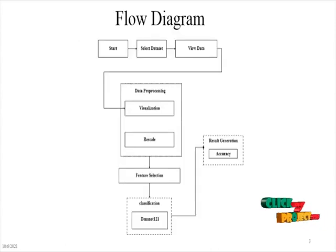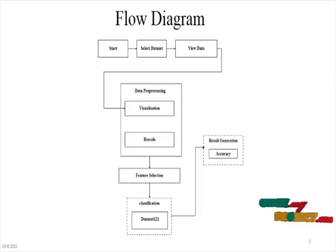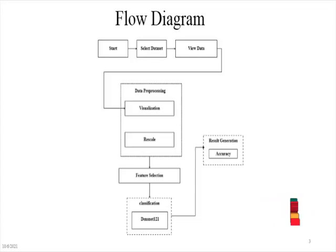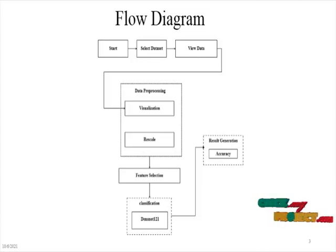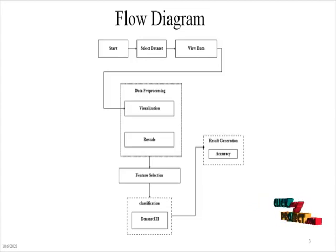In the flow diagram of the project: first, we start the program and select the plant dataset as input data. We use the dataset as a data frame — like tail or head. Then it applies into data pre-processing, where we retrieve sample images from the directory and rescale the images.